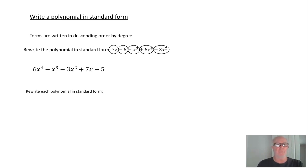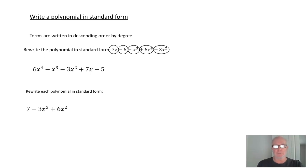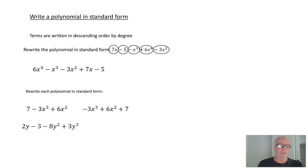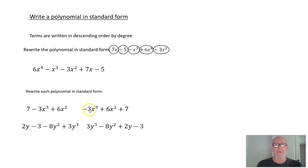Here are some for you to try — rewrite each polynomial in standard form. First: 7 − 3x³ + 6x². Pause the presentation, write that in standard form. In standard form, that would be −3x³ + 6x² + 7. Next: rewrite 3y³ − 8y² + 2y − 3 in standard form. In standard form that would be 3y³ − 8y² + 2y − 3, going by degree from 3 to 2 to 1 to 0.